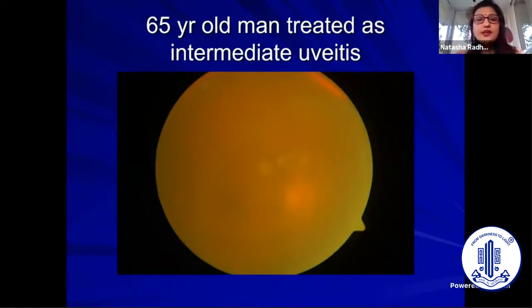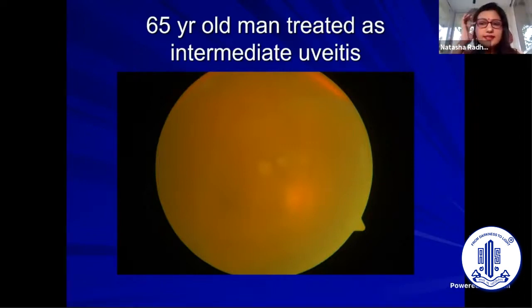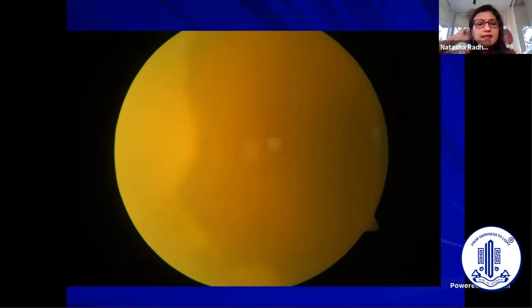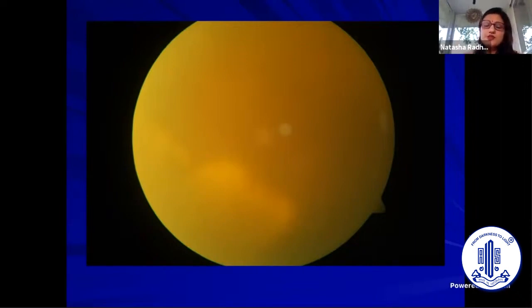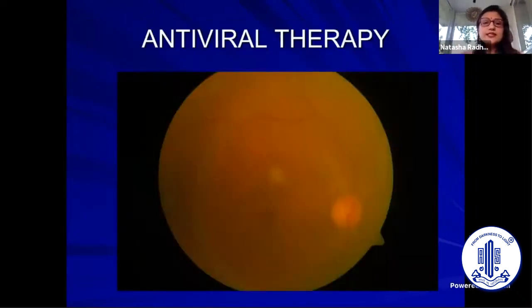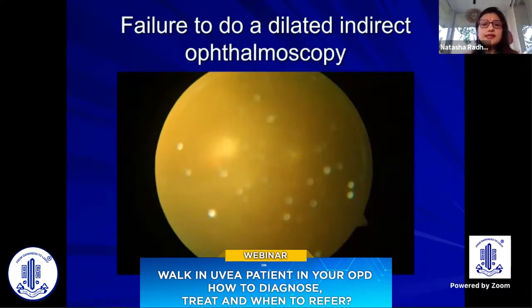Consider this case: a 65-year-old man was treated as intermediate uveitis with a very hazy fundus view, and referred to us as not responding to steroids. When we examined the periphery, a very common mistake was apparent — the periphery was not examined properly, and there was a viral retinitis. You can see the classic tongue-shaped lesions in the periphery, which is characteristic of acute retinal necrosis. This patient responded nicely to antiviral therapy.